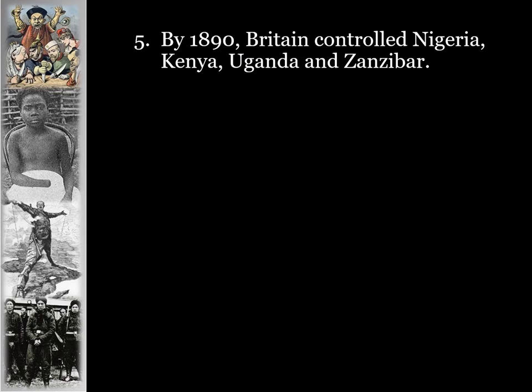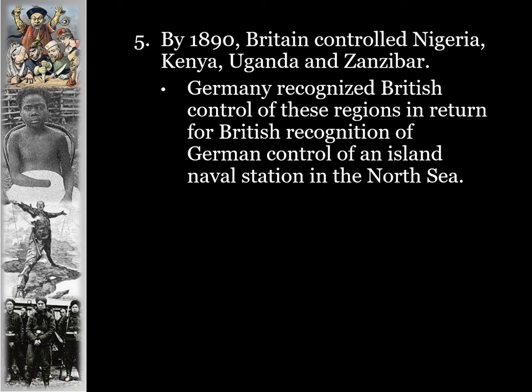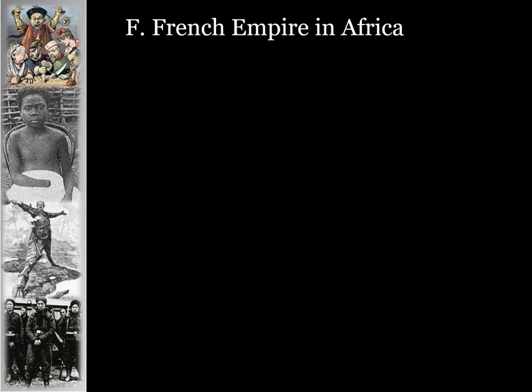By 1890, Britain controlled Nigeria, Kenya, Uganda, and Zanzibar. Germany had to recognize British control of these regions in return for British recognition of German control of an island naval station in the North Sea.